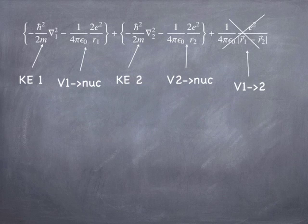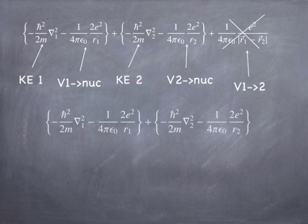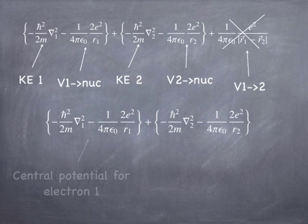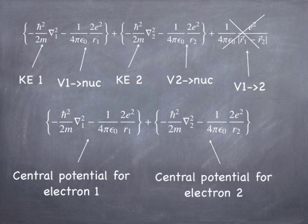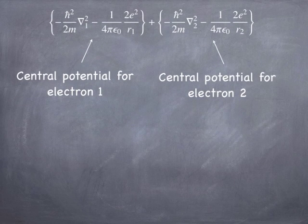And the same thing for the second term. One deals with electron 1, one deals with electron 2. And there are no terms in the Hamiltonian, ignoring that last one, that deal with the interaction between the electrons. And so we can think of that as being two independent electrons that don't interact with each other at all.